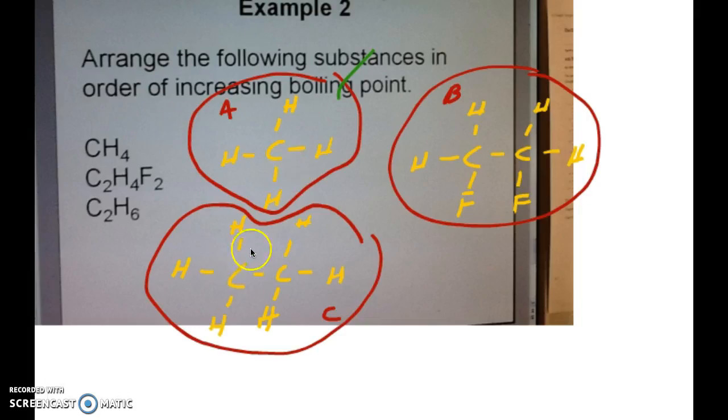Now I want to do a second example of a problem. In this case, it's asking for arranging the following substances shown here in order of increasing boiling point. So very similar to the previous problem, we'll have to start with our Lewis structure, which I already did here.